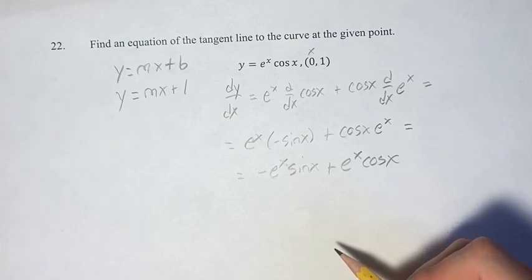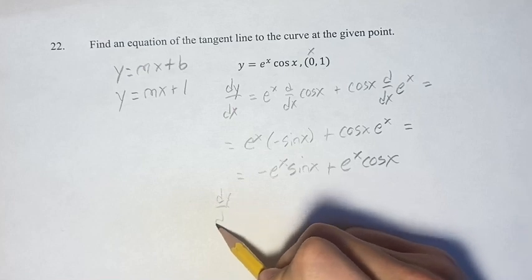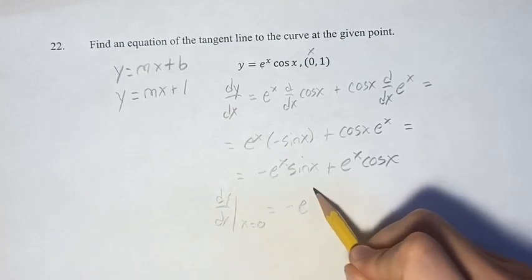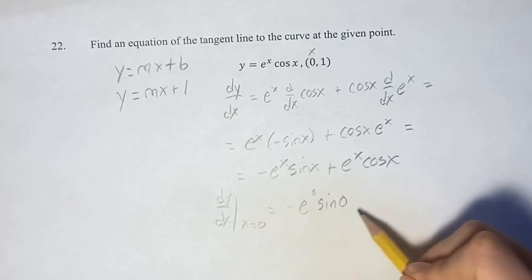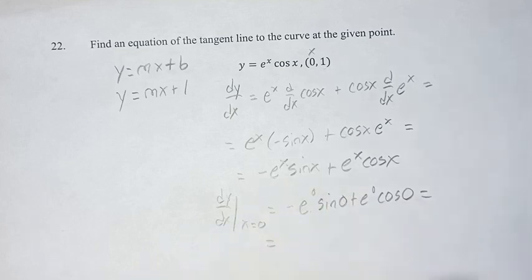We are going to evaluate this at x equals 0. So dy/dx at x equals 0 is going to be equal to negative e to the 0 sine 0 plus e to the 0 cosine 0. So this is just plugging in 0 for x everywhere.